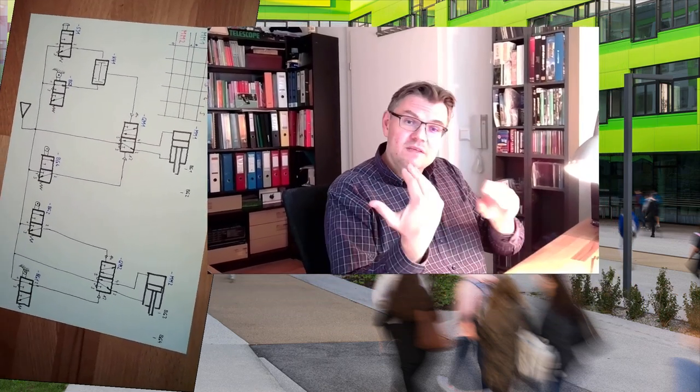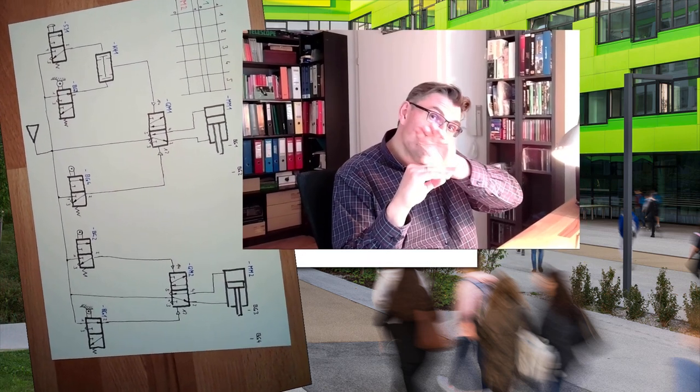Usually we use roller lever valves, valves which can detect where the cylinder is. If the cylinder is traveling and reaches end position, it will operate the valve and the valve gives a signal. Also in the other direction, the valve is touched by the cylinder if it is going inside.